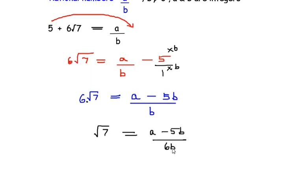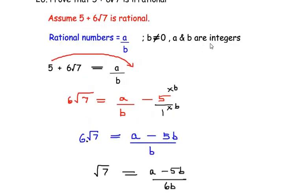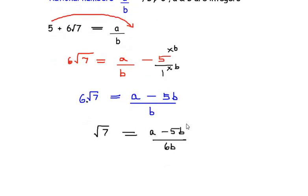Now here our numerator is made up of a and b, and a and b we have considered as integers. So our numerator is going to be integer and denominator is also going to be an integer. So overall if we look at this fraction a minus 5b over 6b, this represents our rational number.